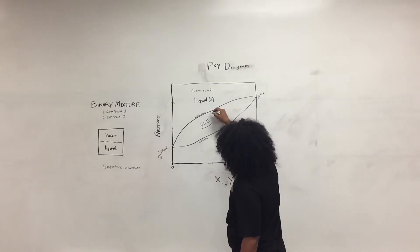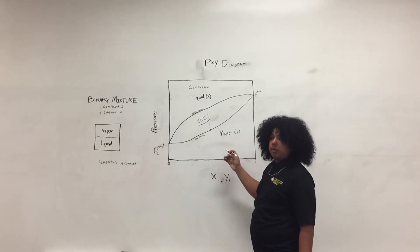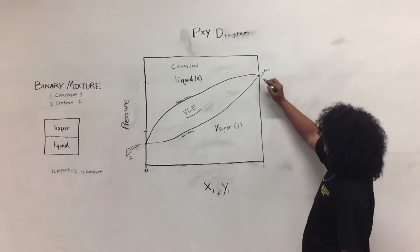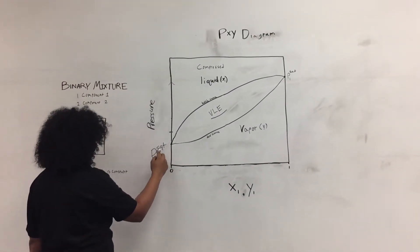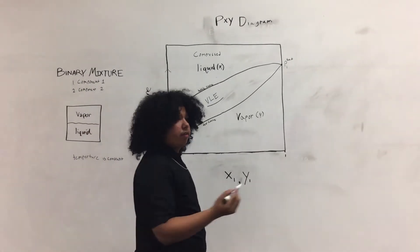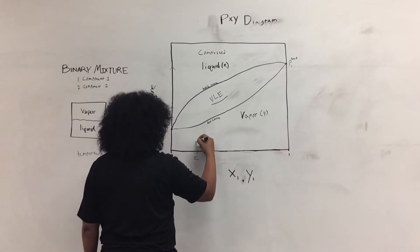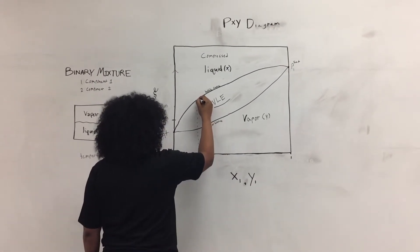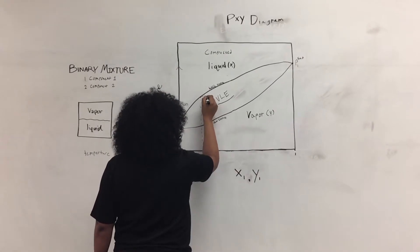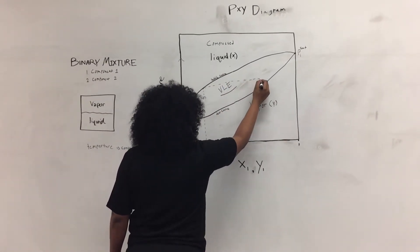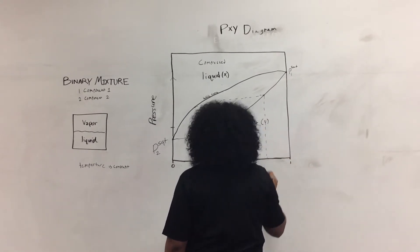If we decrease the pressure a little more, we reach the dew point or dew curve, where the first droplet of liquid is formed. P1 is the saturated pressure for component 1, and P2 is the saturated pressure for component 2. Given an overall composition z in the liquid phase, we draw a point at the bubble curve, then draw a tie line to find the corresponding vapor phase composition.